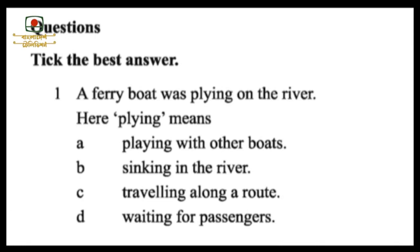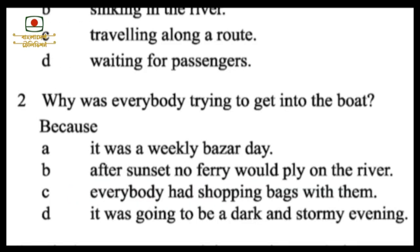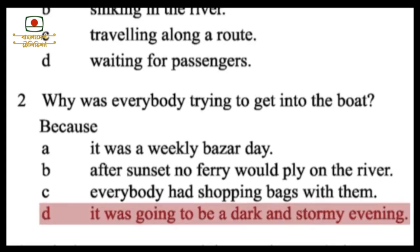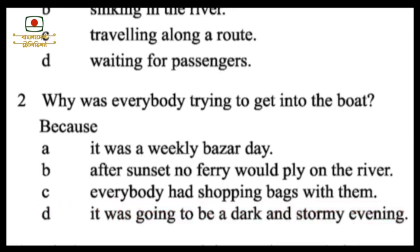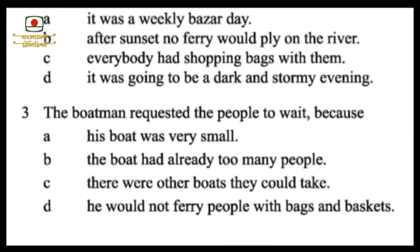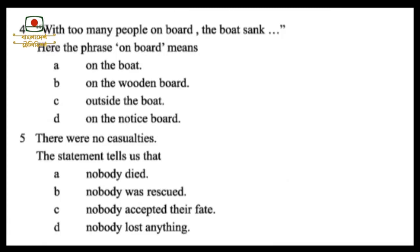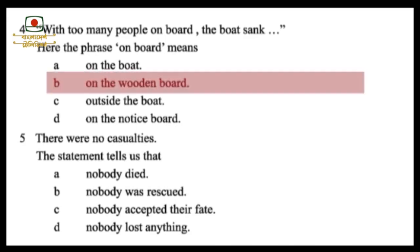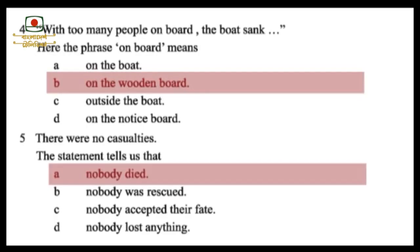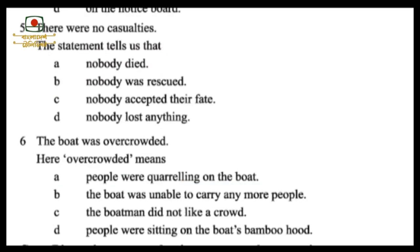Multiple choice number 1: 'A ferry boat was plying on the river' — what is the meaning of 'plying'? Answer: traveling along a route. Number 2: Why was everybody trying to get into the boat? Because it was going to be a dark and stormy evening. Number 3: The boatman requested the people to wait because the boat already had too many people. Number 4: 'With too many people on board the boat sank' — here 'on board' means on the boat. Number 5: 'There were no casualties' means nobody died. Number 6: The boat was overcrowded means the boat could not carry any more people.